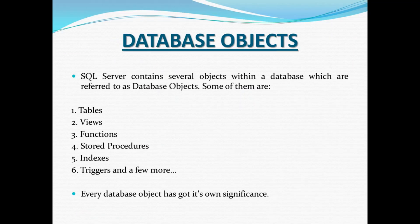SQL Server contains several objects within a database, referred to as database objects. Some of them are tables, views, functions, stored procedures, indexes, triggers, and a few more. Every database object has got its own significance. In this video we are only going to understand about tables, and the rest of the database objects will be covered in upcoming sessions.